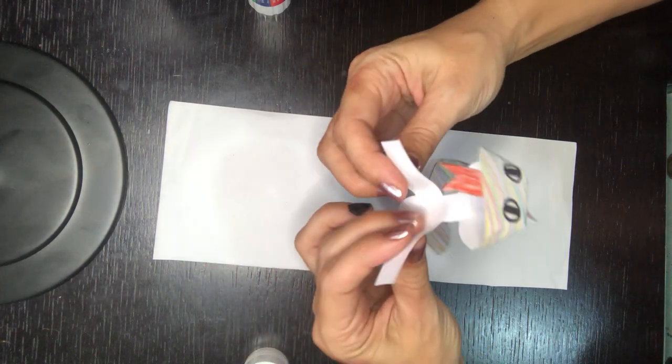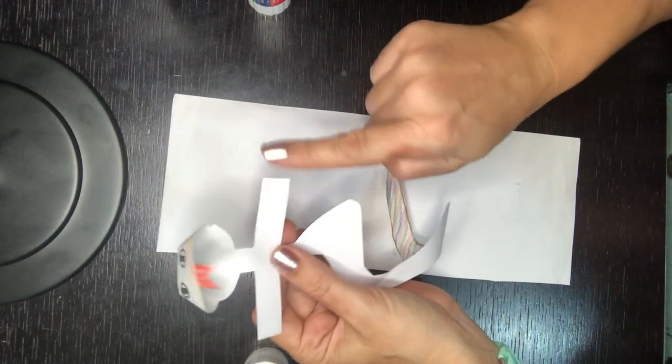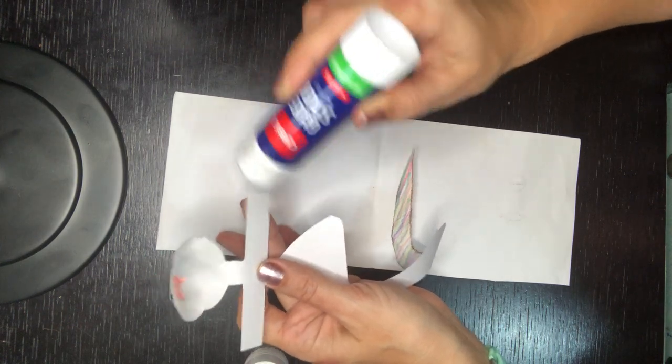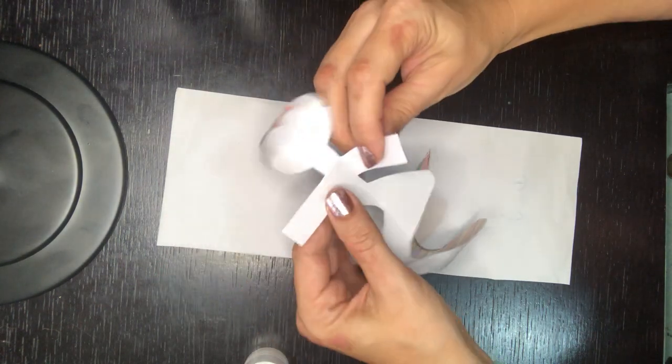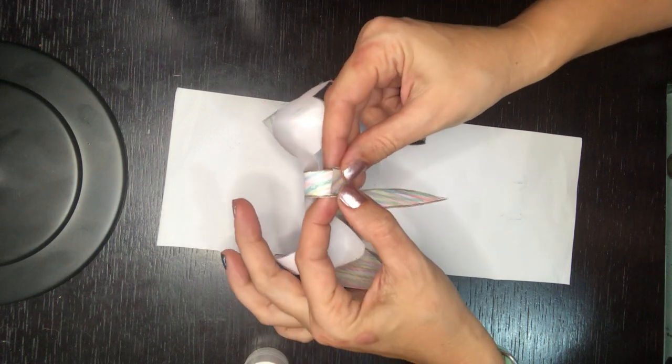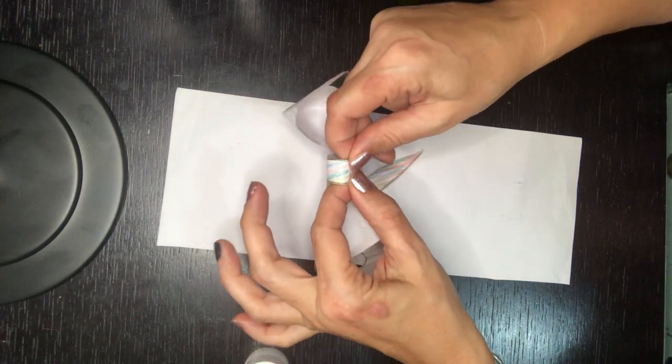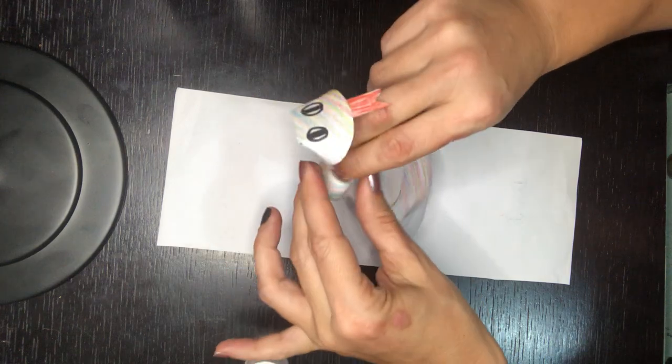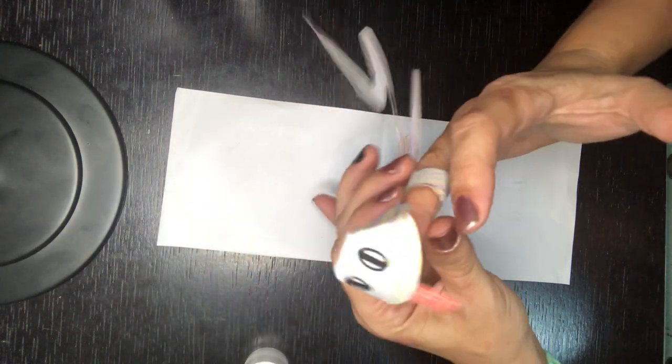So just select a side. I'm going to go with this one and I'm going to loop it around and glue it. Not so tight. You have to get your fingers through there. One, two and three and there you go.